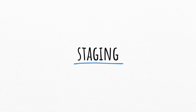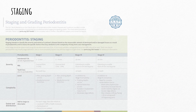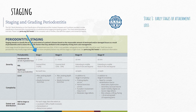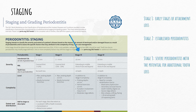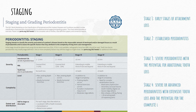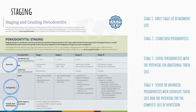Now moving on to staging. In this table we have periodontitis that could be stage 1, manifested as early stages of attachment loss; stage 2, progressed to established periodontitis; stage 3, severe periodontitis with potential for additional tooth loss; and stage 4, severe or advanced periodontitis with extensive tooth loss and potential for complete loss of dentition, which might translate to loss of masticatory function. On the right-hand side, severity and complexity guide us to the stage, while extent and distribution below determine if periodontitis is localized, generalized, or has a molar incisor pattern.